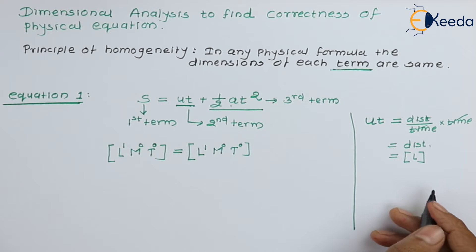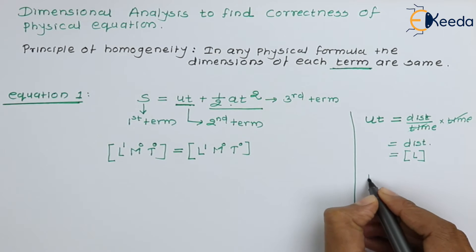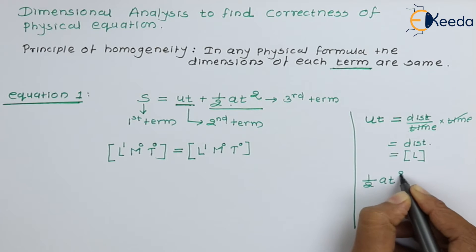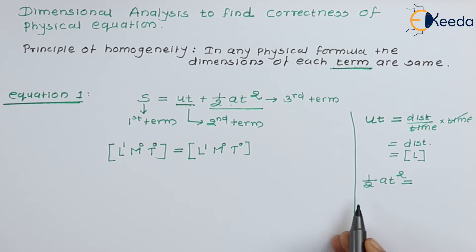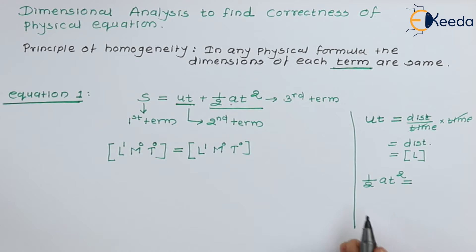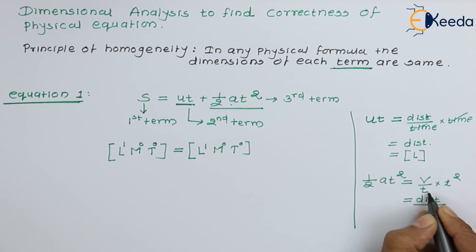Let us find out dimension of third term. Third term is half A, T square. We know half is a constant, so it does not have any dimension. Now A is an acceleration. Acceleration, we can write velocity per unit time into T square. This T square. Now velocity is nothing but distance per unit time. So we will write down distance per unit time and this time is also there. This is T square into T square. Again, this T square will get cancelled.